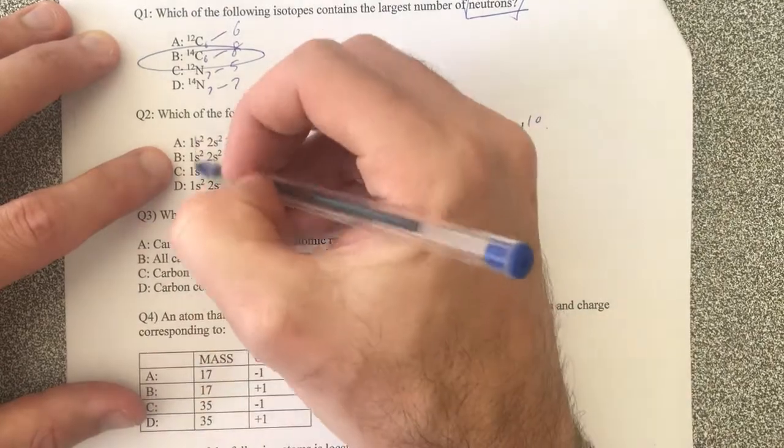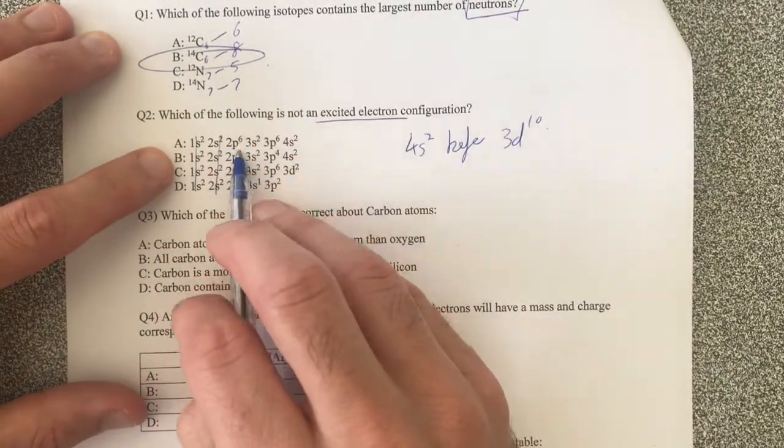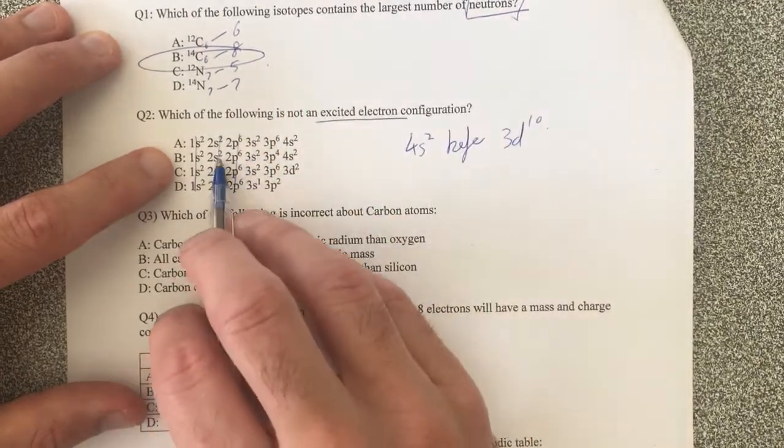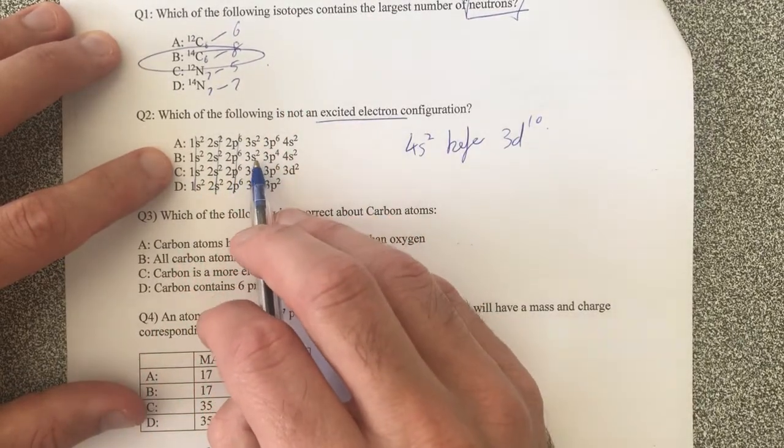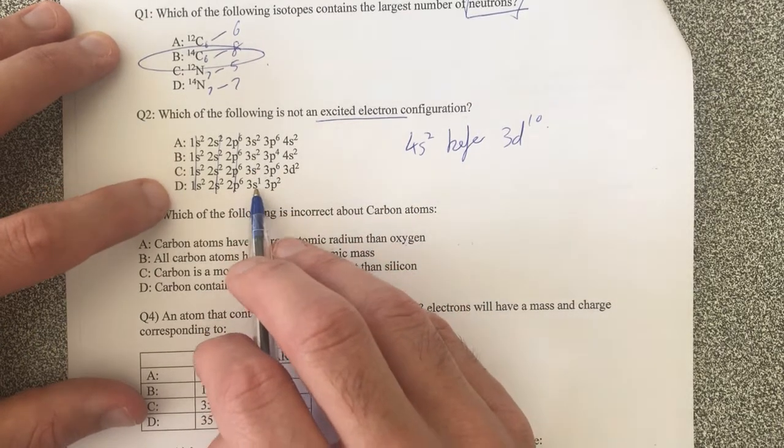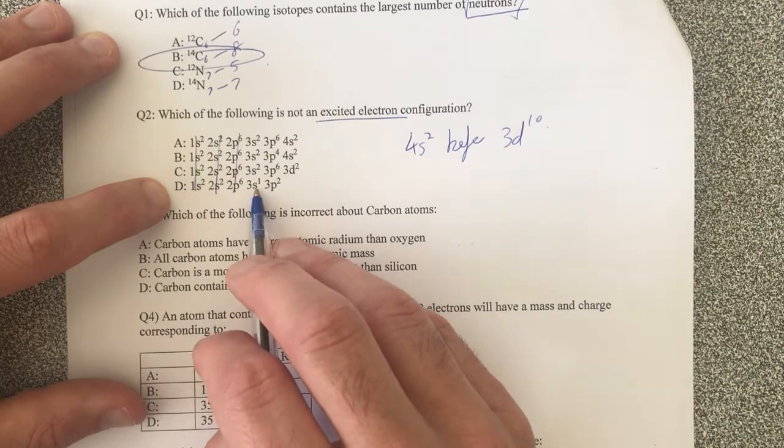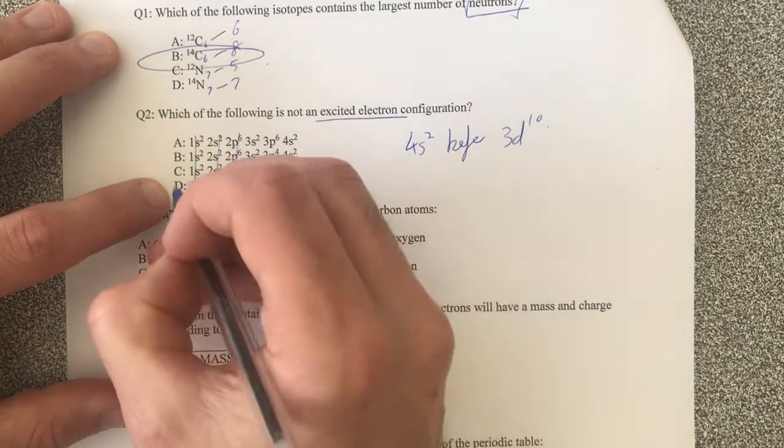So let's have a look. 1s2 is the first thing so it's going to be all good. 2s2 is all good there. 2p6, that's all good there. Then I get to 3s2. That should be fine. This one is only 3s1. So what that means is that this is excited because an electron must have jumped up to the p-shell. So it's not going to be d.